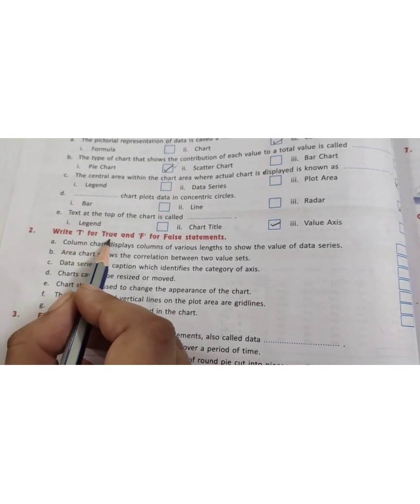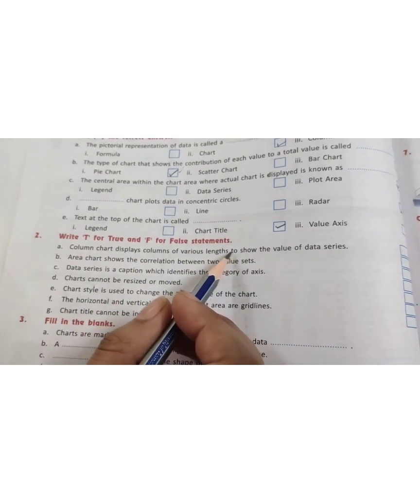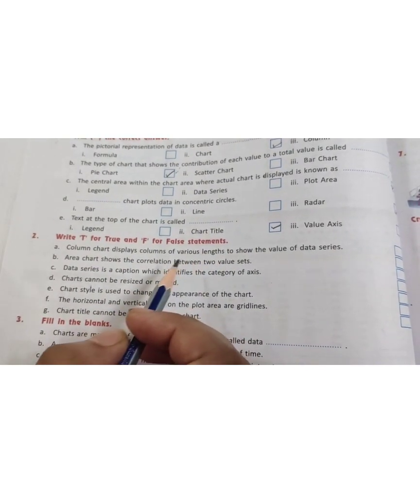Next, we have write T for true and F for false statements. And as you know, if the statement is false you need to correct it.